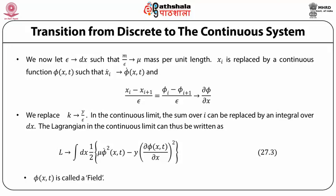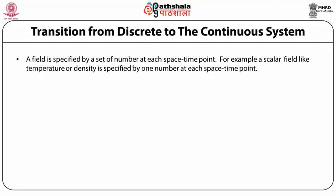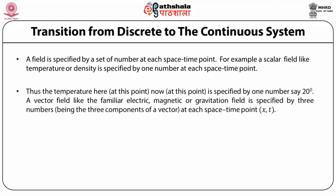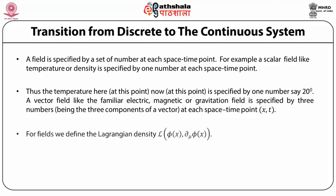Here φ(x,t) is called a field. A field is specified by a set of numbers at each space-time point. For example, a scalar field like temperature or density is specified by one number at each space-time point — the temperature at this point now is specified by one number, say 20 degrees. A vector field like the familiar electric, magnetic or gravitational field is specified by three numbers — being the three components of a vector at each space-time point (x,t).